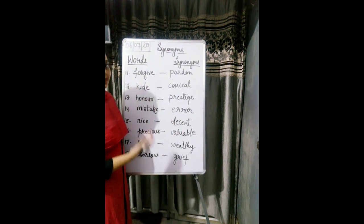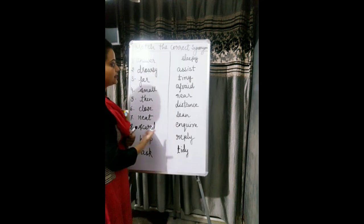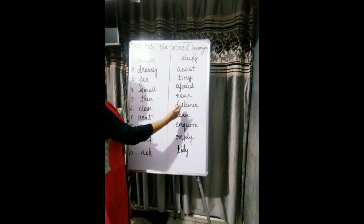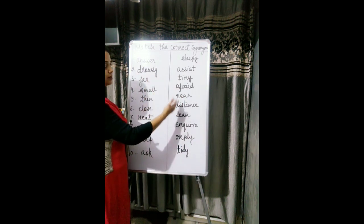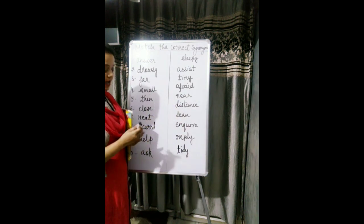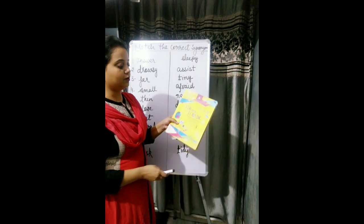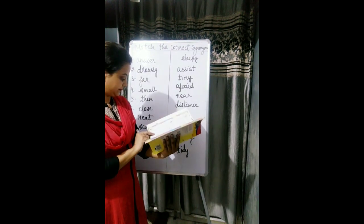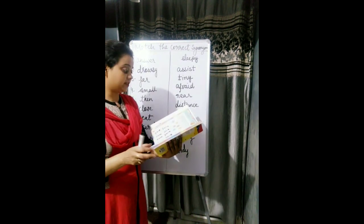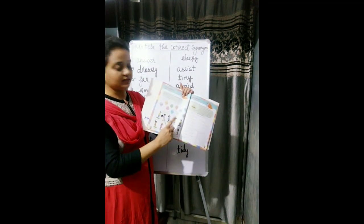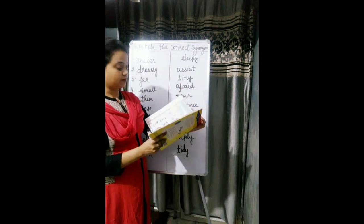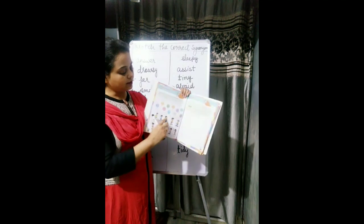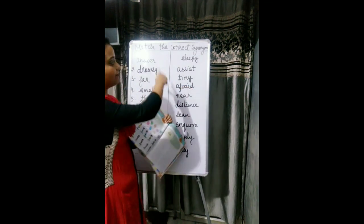Now let's do one exercise to make it more clear. In this exercise you have to match the word with the correct synonym — the word which has the same or nearly the same meaning. This exercise is taken from your practice worksheet book and you will get this exercise on page number 24, worksheet 23. If you have it, you can open it and directly fill it in. Same thing I have written over here.